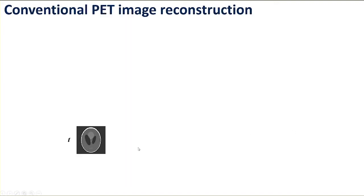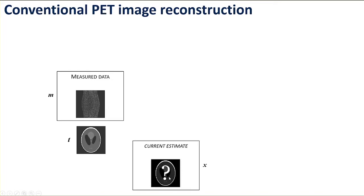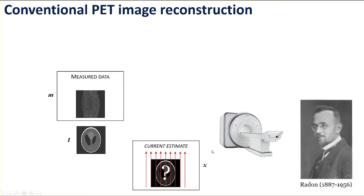Conventionally in PET, using a simple Shep-Logan phantom simulation, we have some ground truth T. This is a discrete representation of what we would like to reconstruct, inside the scanner field of view. We detect these back-to-back photon pairs, which give rise in this 2D simulated example to a collected sinogram — a data vector M. What we're trying to do in image reconstruction is estimate what that ground truth was, that radiotracer distribution — calling that X — a current estimate, as this will be an iterative process.